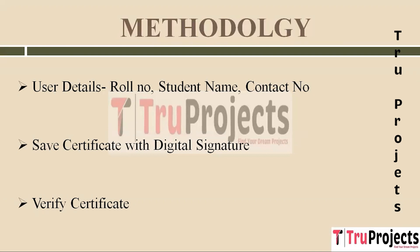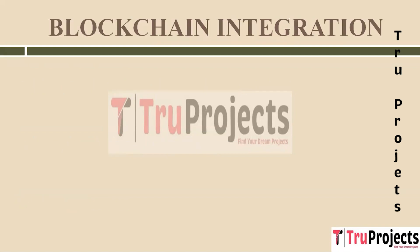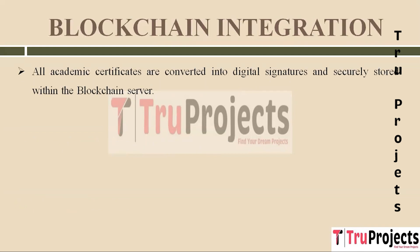The third module is Verify Certificate. In this module, verifiers — companies or administrators — can upload a student's certificate to the system for verification. The uploaded certificate is converted into a digital signature, and the system checks this digital signature against the record stored in the blockchain database. If the digital signature matches the stored records, the system retrieves all of the student's details and displays them to the verifier, confirming the certificate's authenticity. If no match is found, it means the certificate may be fake or tampered with.